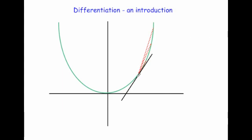Let's look at working out the gradient of the tangent at a particular point. I've drawn the tangent, but the only thing is I don't know any other points on this tangent line. So what I could do is work out the gradient of a chord — choose one point on the curve and another point on the curve, and work out the gradient of that chord. As I bring the chord closer and closer to the point, the chords get closer and closer to being parallel to the tangent.